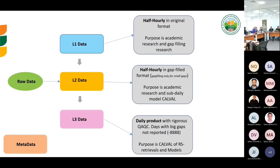I would like to mention a bit about the data processing protocol we have adopted. We have three levels of data: L1, L2, and L3. These are composite data files generated from various variables coming from different sources such as radiation, temperature, and evapotranspiration estimates from different methods.